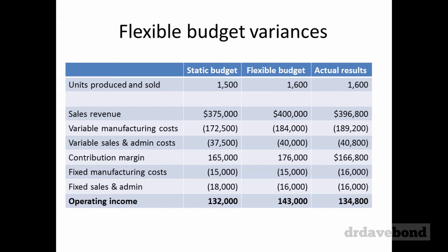Hi everyone. In this video, we're going to look at flexible budget variances, specifically around the variable manufacturing costs. We have the static budget, the flexible budget, and the actual results from a particular company — the same setup as the previous video. The flexible budget variance analysis will only focus on the flexible budget and the actual results and the differences within them, so we can ignore the static budget from this point.